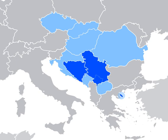In addition, it is a recognized minority language in Montenegro, where it is spoken by the relative majority of the population, as well as in Croatia, Macedonia, Romania, Hungary, Slovakia, and the Czech Republic.